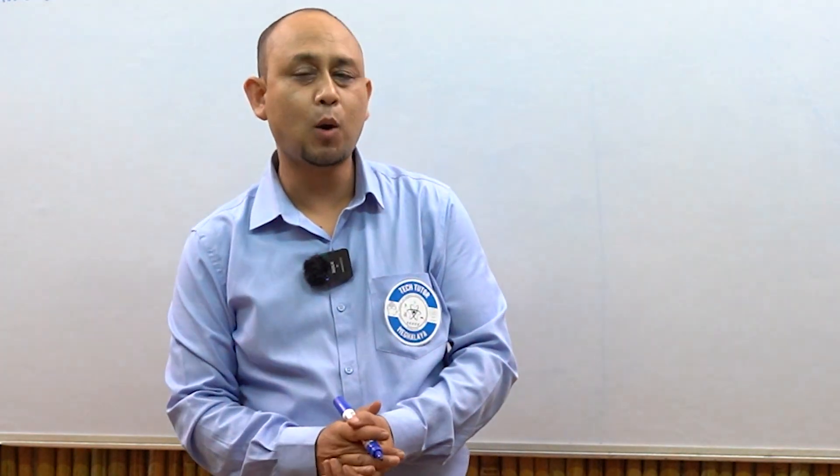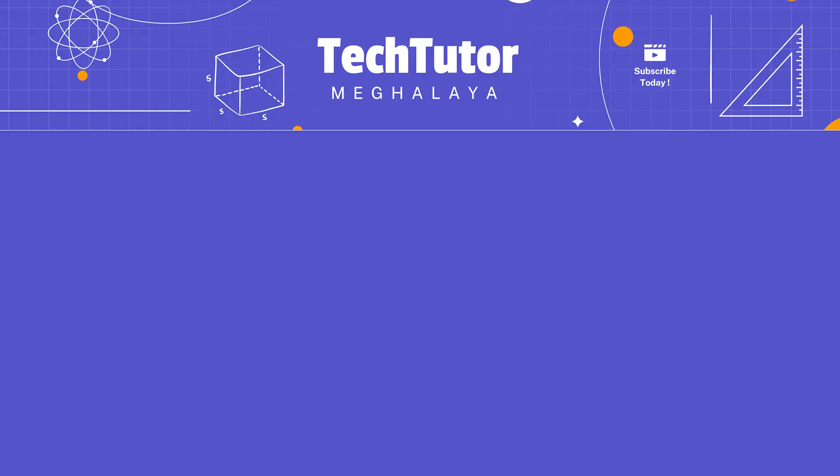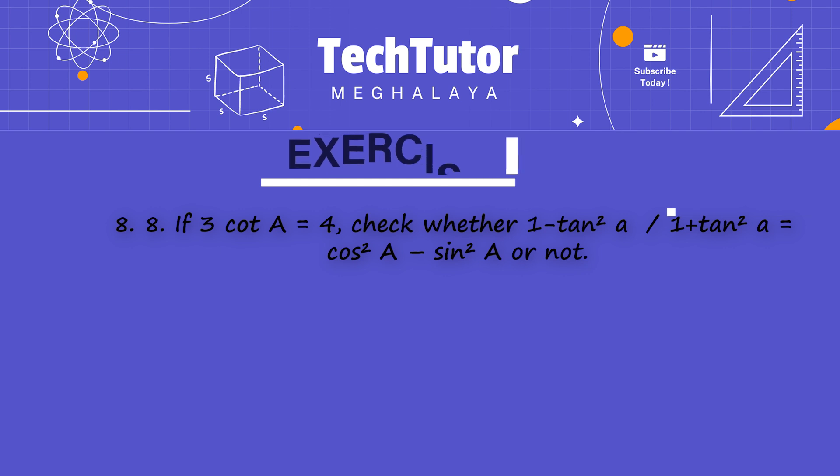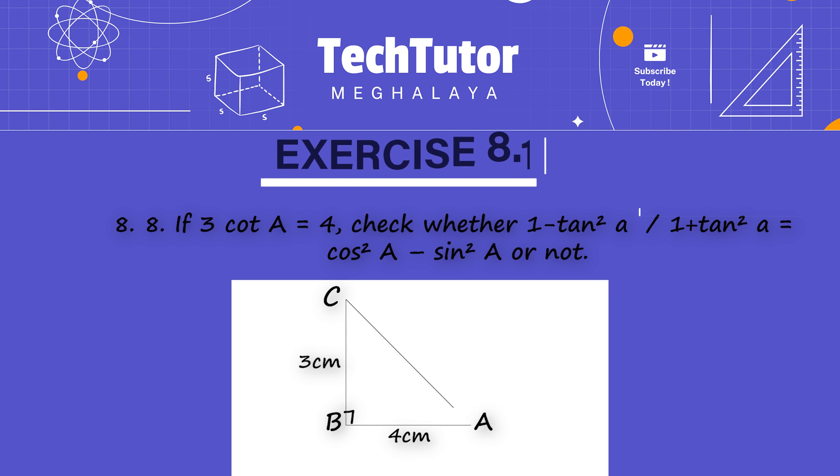This is the 8.1 exercise of trigonometry. The problem is: 1 minus tan square A divided by 1 plus tan square A is equal to cos square A minus sin square A.